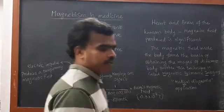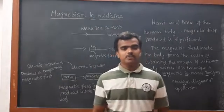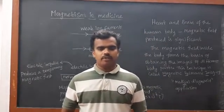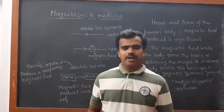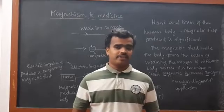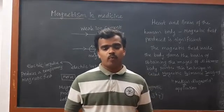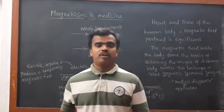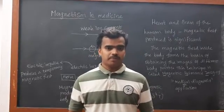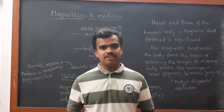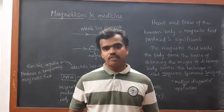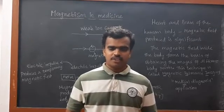Welcome to our classroom. Here we are going to see about the application of magnetism. So far we have dealt with how the magnetic field is produced in a straight conductor, circular coil, and even in a solenoid. Now we are moving on to the application side. If we take MRI, what is the basic principle? The magnetic field — due to that magnetic field, we get imaging of human body parts.